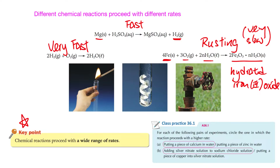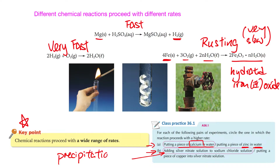Here are two more examples. Putting a piece of calcium in water gives a fast reaction because bubbles come up very quickly. Putting zinc into water is relatively slow because zinc is not a very reactive metal. Calcium is more reactive, so it reacts faster. Adding silver nitrate solution to sodium chloride solution is a precipitation reaction and is relatively fast — you can see the white precipitate form immediately once the two solutions are mixed.